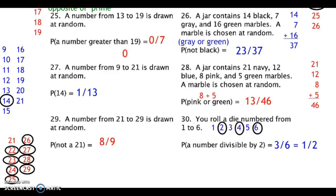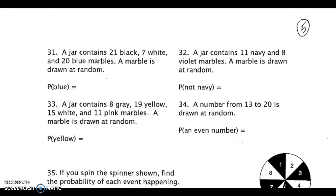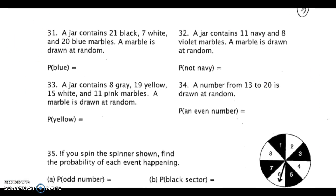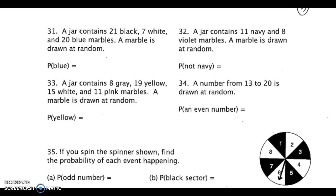Let's move on to the next page. This page introduces what's called a spinner — another way of generating probability — and there are eight different outcomes. I'm going to let you take a look at this page and try it out, then I will show you the answers. Pause the video now.